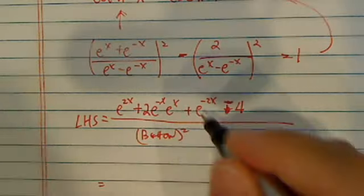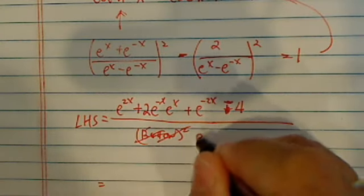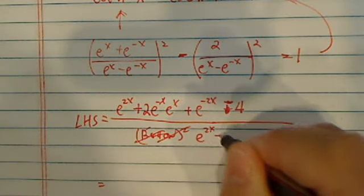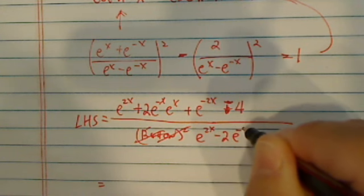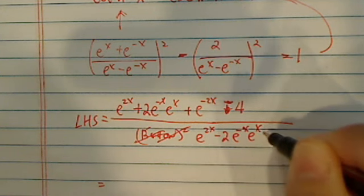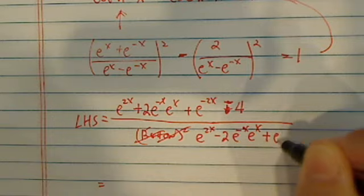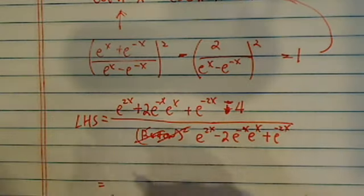A couple more steps, actually. Let's write this one up. So this is e^(2x) minus 2 e^(-x), e^x, and then plus e^(-2x).